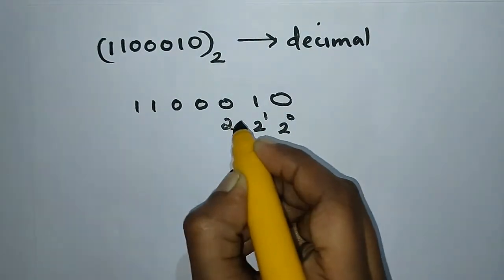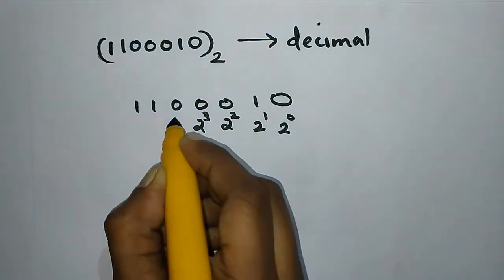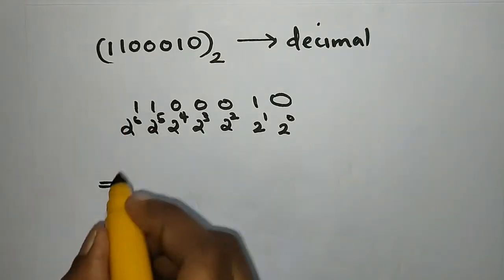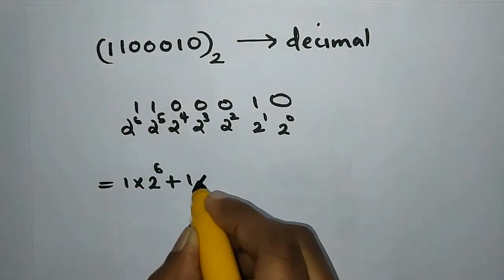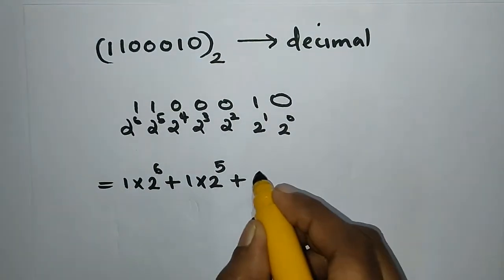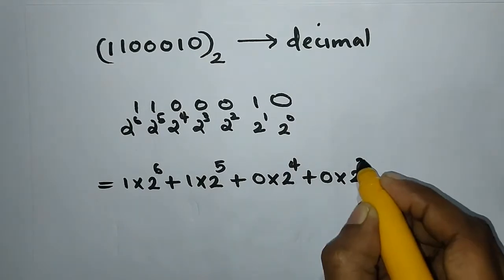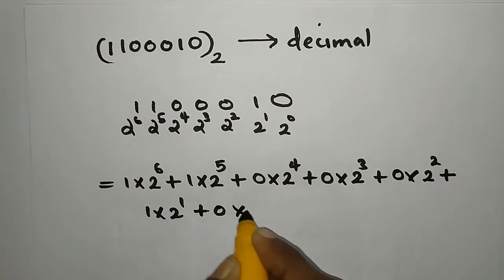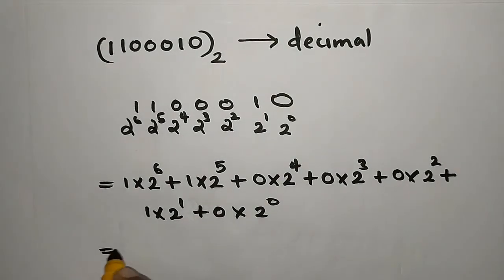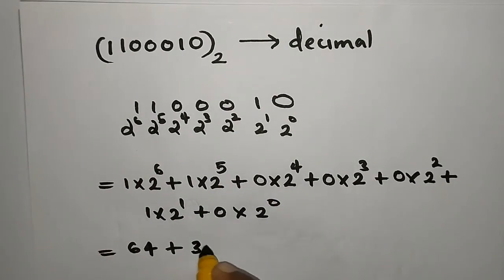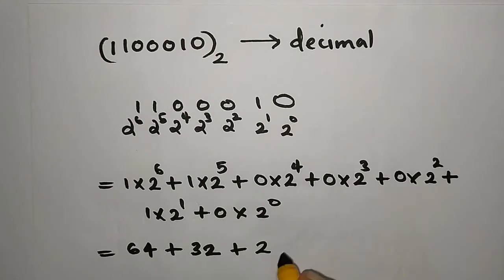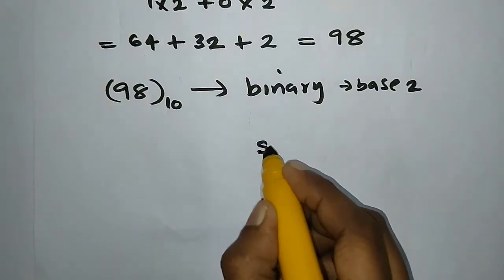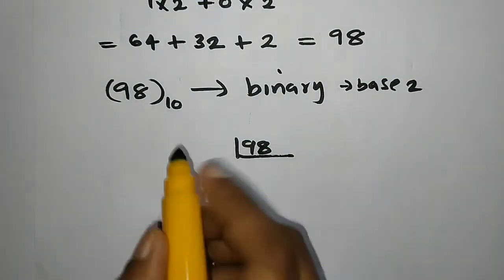The binary number 110010 is converted to decimal using powers of 2: 2 raised to 0, 1, 2, 3, 4, and 5. We calculate: 1 × 2^5 + 0 × 2^4 + 0 × 2^3 + 1 × 2^2 + 1 × 2^1 + 0 × 2^0. Suppose we want to convert decimal 98 to binary.